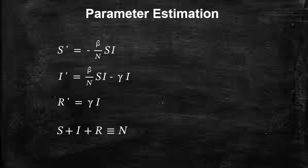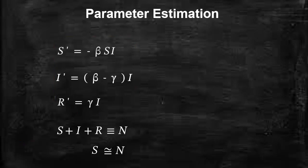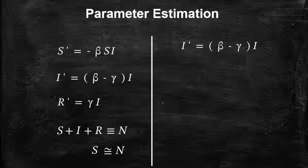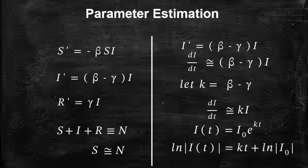Now let's consider the situation when the disease enters the population for the first time. At the beginning, the number of infected individuals will be very small such that the susceptible class will be approximately equal to the total population. Under this approximation, the equation reduces so that the derivative of the infected class with respect to time equals (beta minus gamma) multiplied by the infected class. If we let k equal beta minus gamma and solve this ODE, and then apply the natural logarithm on both sides, we arrive at a linear equation we can use to estimate k.